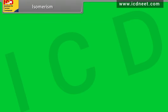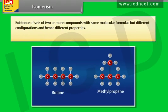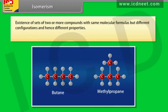Isomerism is the existence of sets of two or more compounds with same molecular formulas but different configurations and hence different properties. The compounds are called isomers.